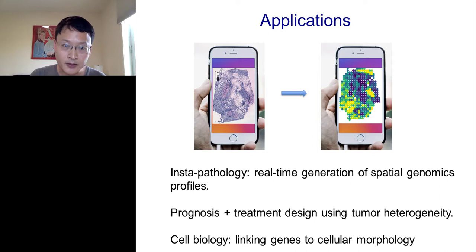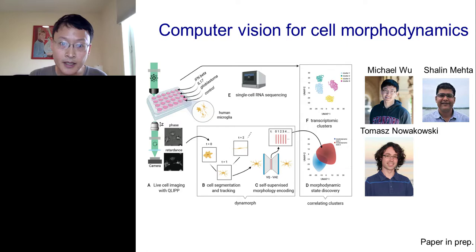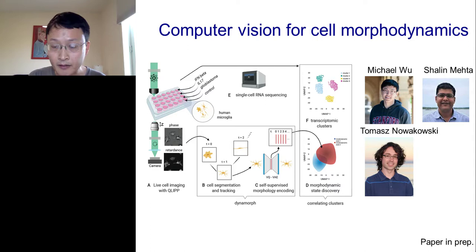In the second part of this presentation, I also want to tell you about how similar kinds of computer vision algorithms can, in addition to capturing spatial variations, also capture temporal variations and morphodynamics. This is a collaboration with my colleague Shaolin, who's at the Biohub, and Tom, who's at UCSF. It's work led by Michael, a great PhD student in my group.